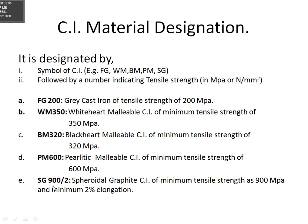Lastly, SG900/2 — spheroidal graphite cast iron. The number following SG is 900/2, which indicates minimum tensile stress with certain elongation. The meaning of SG900/2 is spheroidal graphite cast iron having minimum tensile strength of 900 MPa and minimum elongation of 2%. So this is about the designation of cast iron.